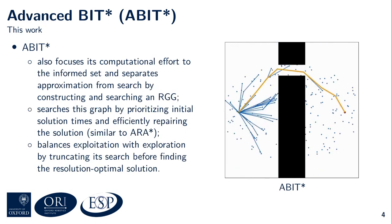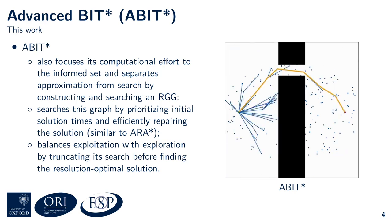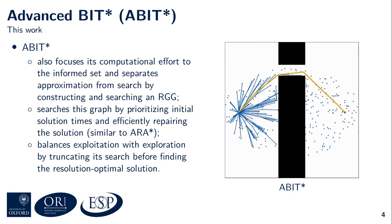Advanced BIT* builds on BIT*. It also focuses its computational effort on the informed set and separates approximation from search by constructing and searching an increasingly dense edge-implicit random geometric graph, just like BIT*. In contrast to BIT*, however, A-BIT* prioritizes initial solution times over efficiency, similar to Anytime Repairing A* or ARA* for short. It achieves this by using multiple searches per level of approximation. Another difference is that A-BIT* balances exploiting the current level of approximation with exploring the state space. It does this by truncating its search once it realizes that the current level of approximation does not contain a solution much better than what A-BIT* has already found. This can be done because A-BIT*'s search can always provide an upper bound on the suboptimality of the current solution in the context of the current approximation.